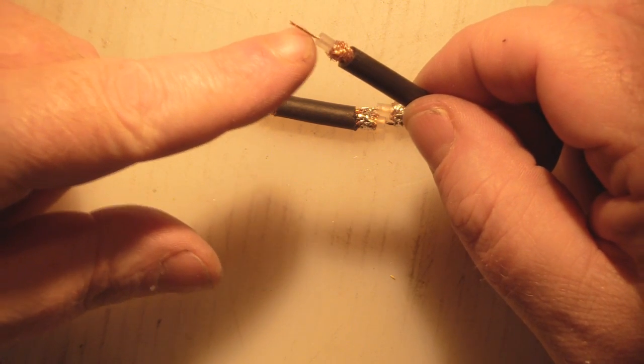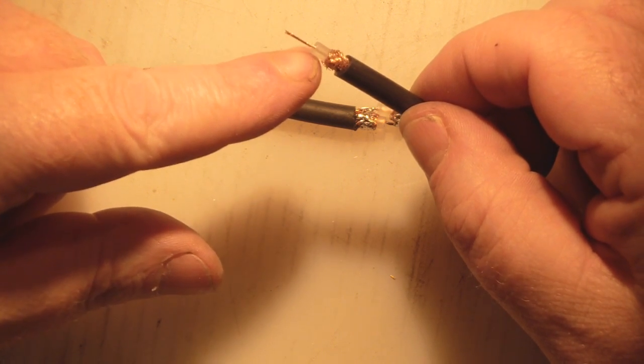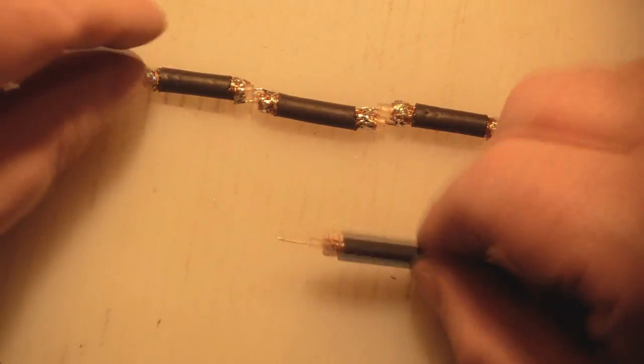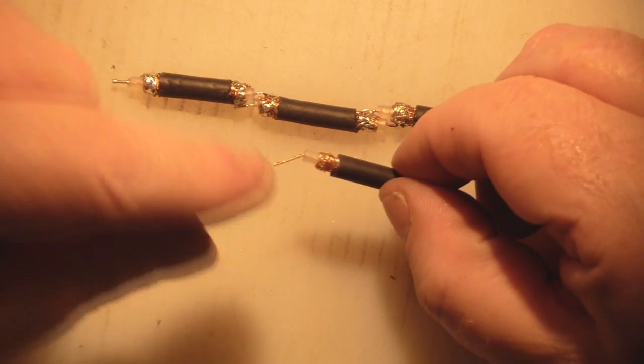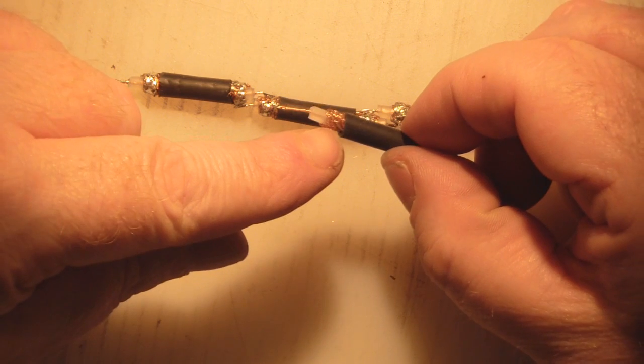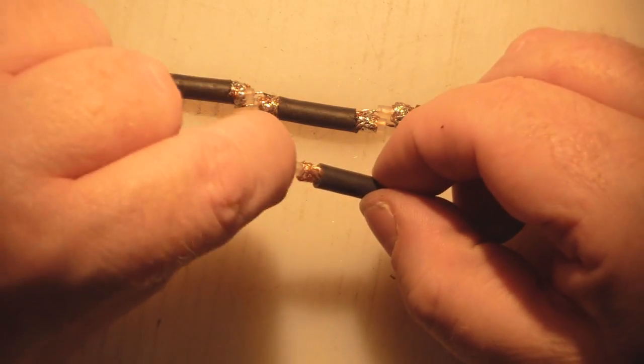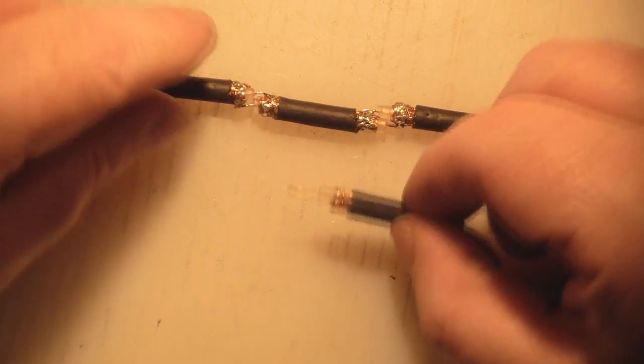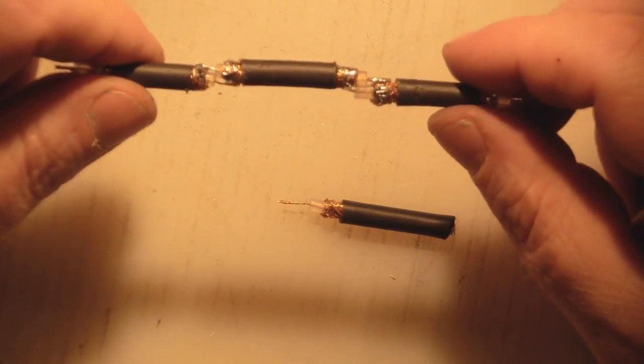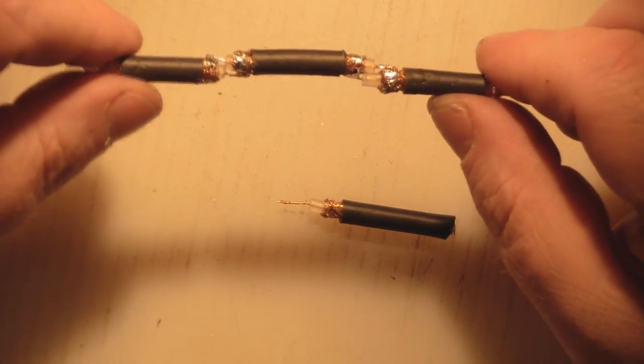The inner core again you cut away but leave some of this insulation here so you're not touching. What you have to do is go in there and tin and flood this outer braiding coax of the copper wire with solder and just tin up the inner wire. You construct it like this but it is really messy.